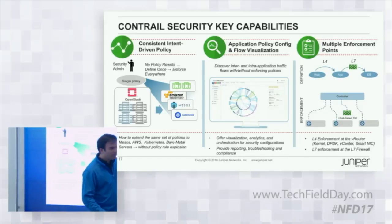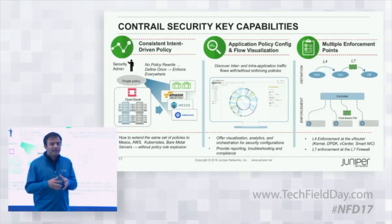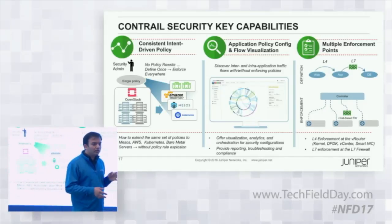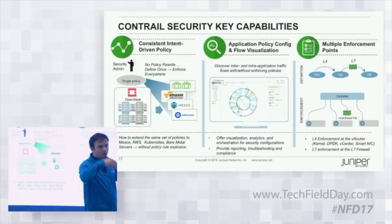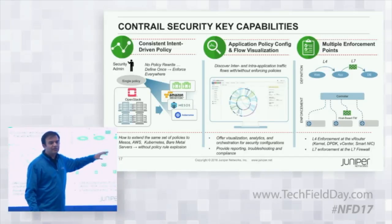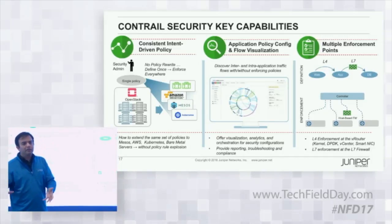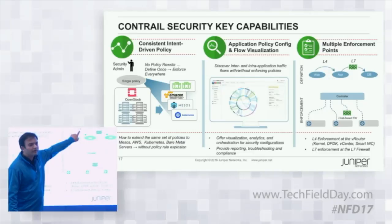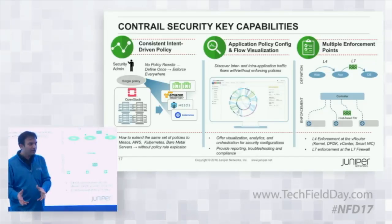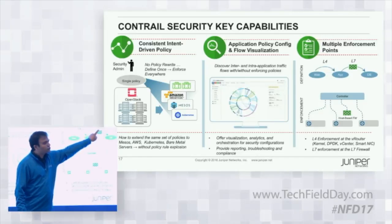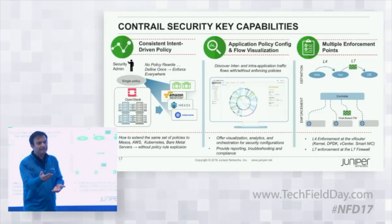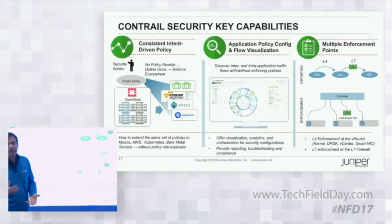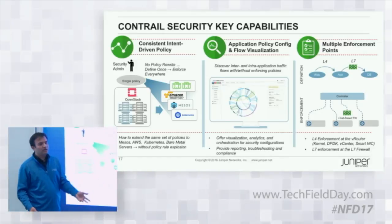Pillar number three: in order to effectively contain the lateral spread of threats, I want to subject east-west traffic within my data center or public cloud not just to L4 security, but also to L7 security — IDS, IPS — which is typically implemented in full-blown firewalls. The vRouter, or what we call the FER node, provides L4 security in the kernel, but we want to redirect selected traffic, selected by policy, to full-blown L7 firewalls and subject that traffic to IDS, IPS, et cetera.